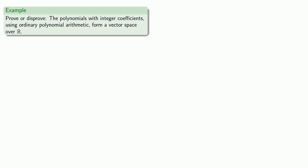Let's consider the following set: the polynomials with integer coefficients, using ordinary polynomial arithmetic, as a vector space over ℝ. This means that our scalars are going to be drawn from ℝ, even though our vectors are polynomials.